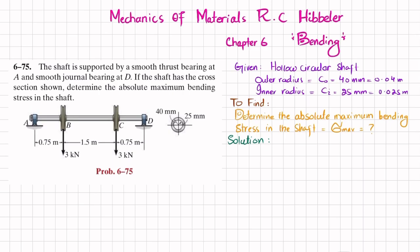Let's start with the solution. If you remove the smooth thrust bearing, the reaction force exerted on the shaft equals Ra. If you remove the smooth journal bearing at D, it applies a reaction force Rd on the shaft. We find Ra and Rd using equations of equilibrium. The first equation: sum of all moments about point A equals zero, taking counterclockwise as positive.